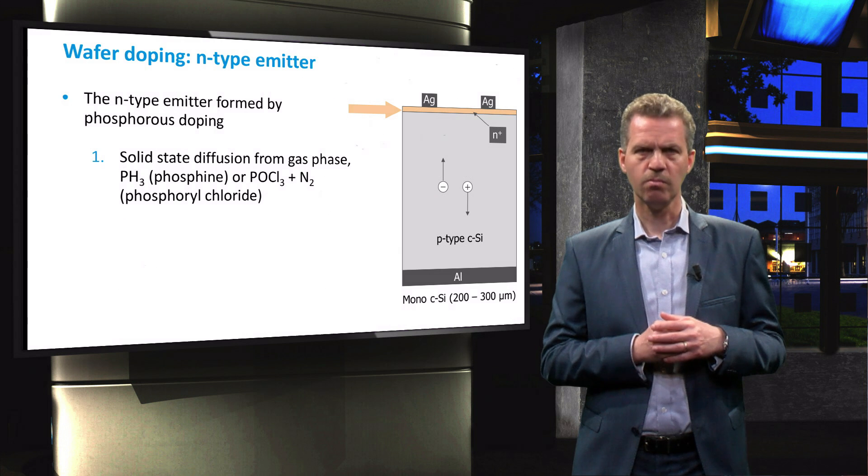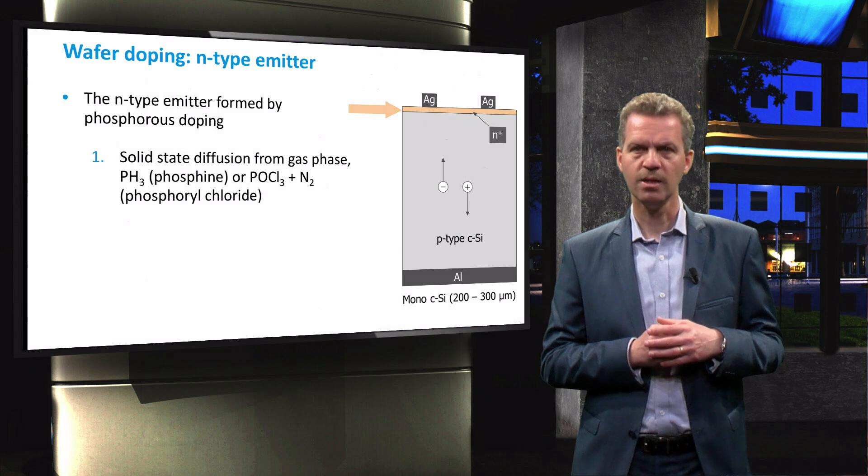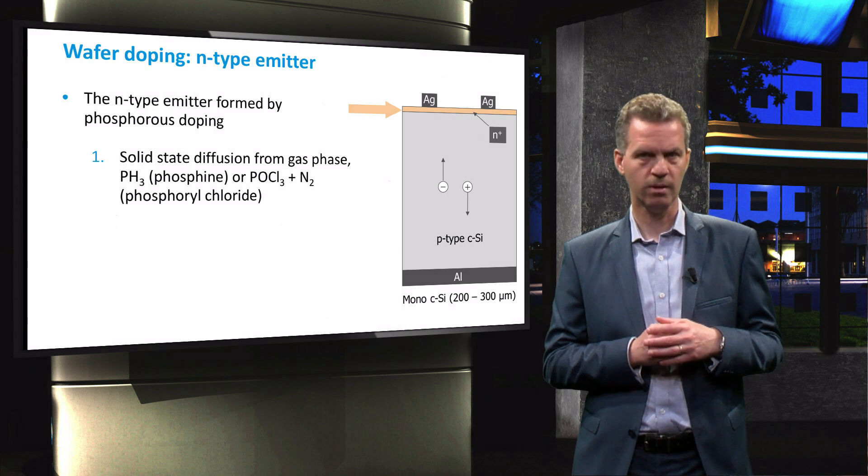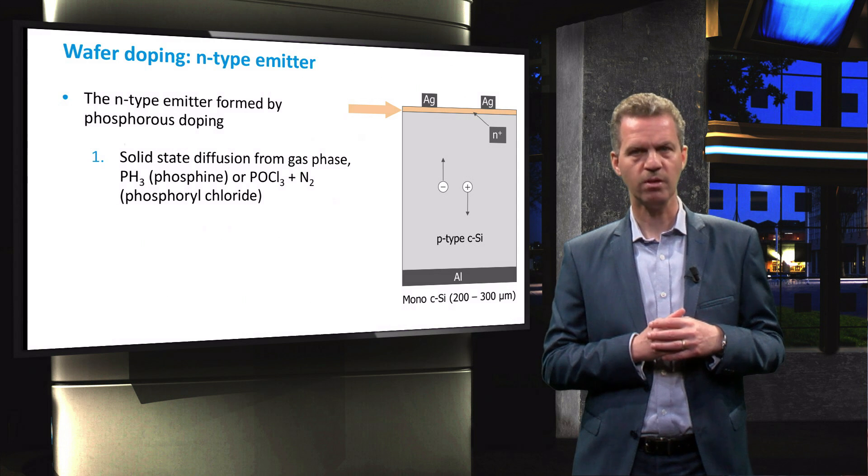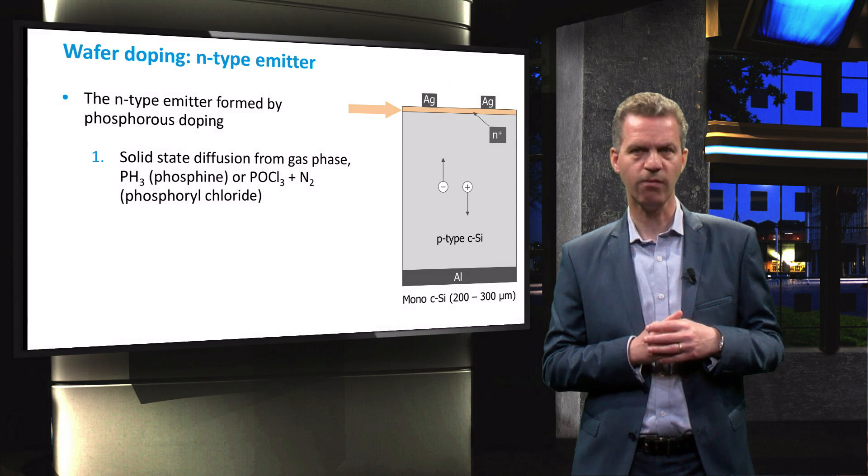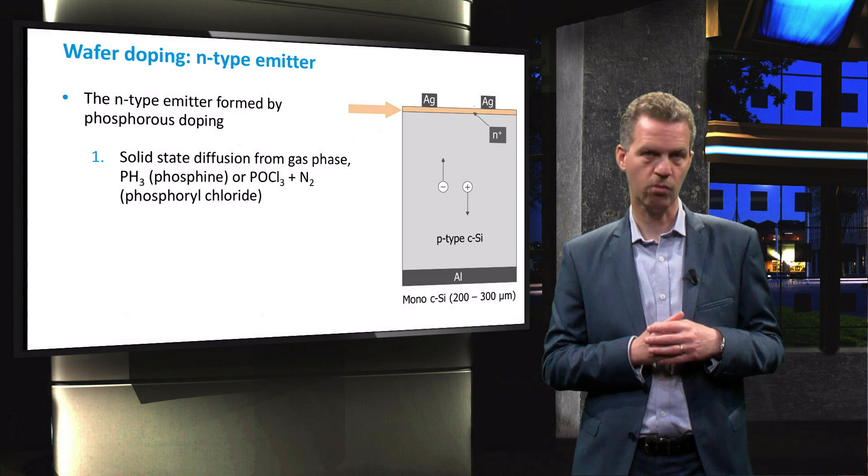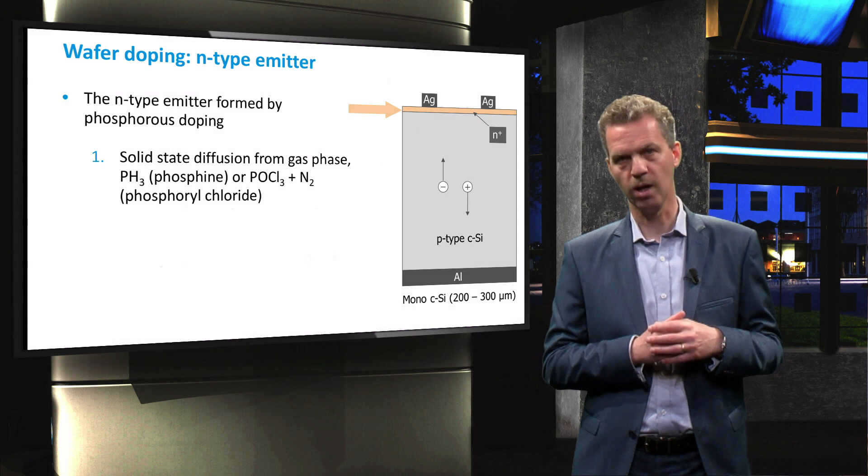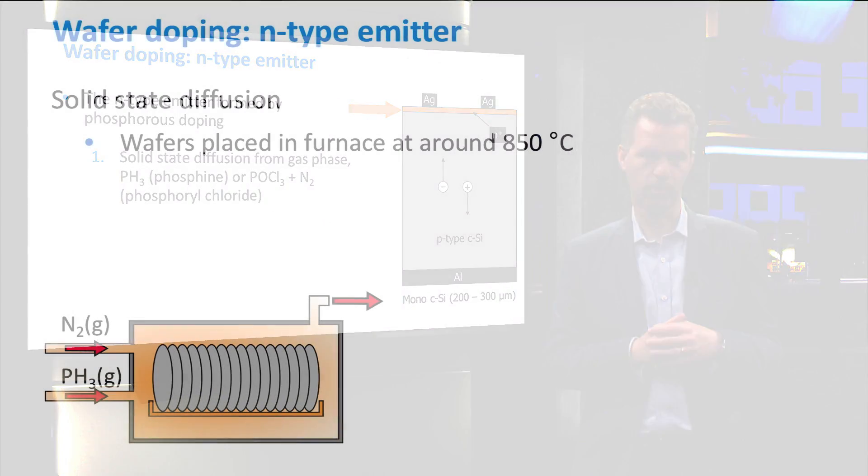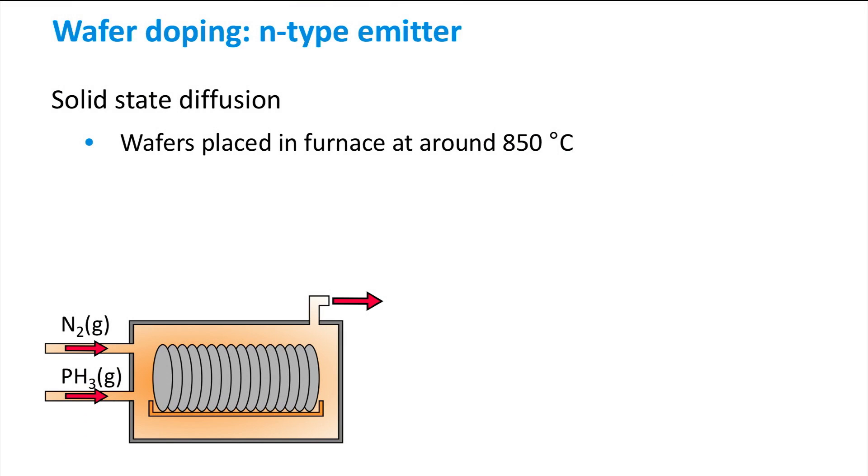The first and most used method in the past is by solid state diffusion from the gas phase. A phosphorus atmosphere is created by using phosphine gas or phosphoryl chloride with chemical formula POCl3. The wafers are placed in a furnace at 850 degrees Celsius to speed up the diffusion process. Phosphine gas, along with other process gases such as nitrogen or oxygen, flows into the furnace.